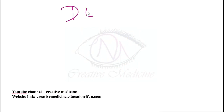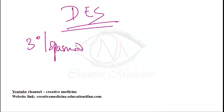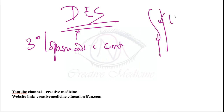In diffuse esophageal spasm, tertiary or spasmodic contractions in the distal esophagus produce spasm, obstructing blood supply and causing ischemia. The patient presents with left-sided chest pain and pain in the lower neck, which can be mistaken for angina.